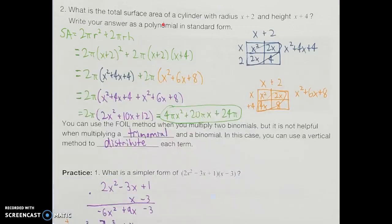If we want to find the surface area of a cylinder, using the formula 2πr² plus 2πrh — where r is the radius and h is the height — we're given those two in terms of expressions: radius of x plus 2 and height of x plus 4. We want to write that in standard form, so we need to simplify. First, I can substitute: replacing r with x plus 2 and h with x plus 4 in the formula. So my second term had both the radius and height substituted.